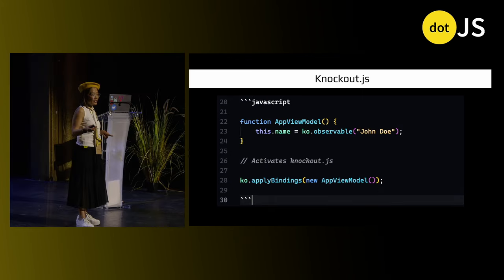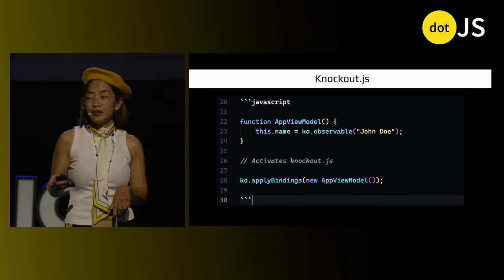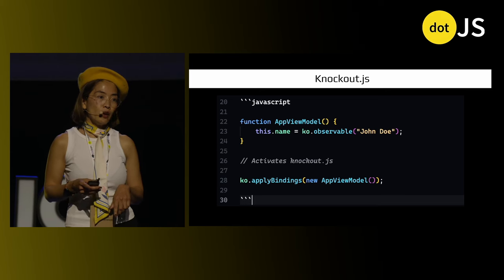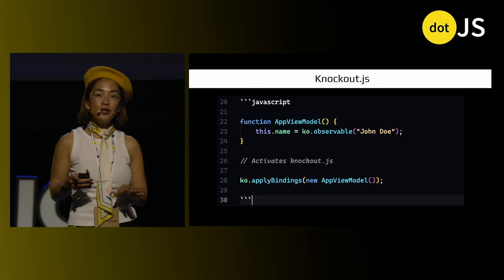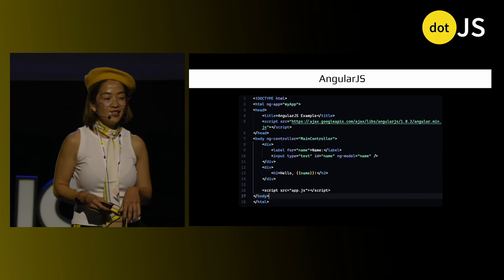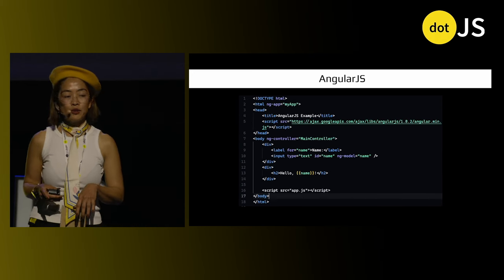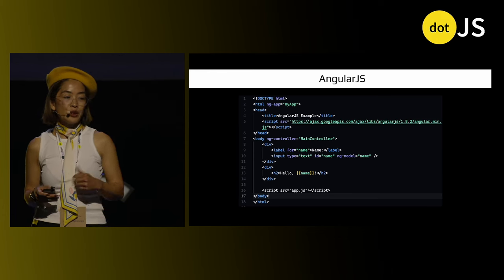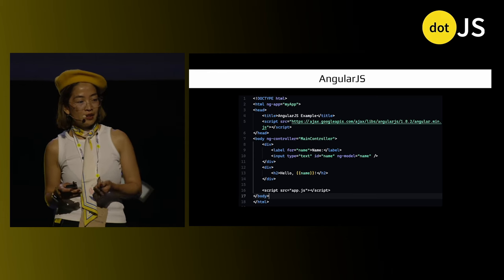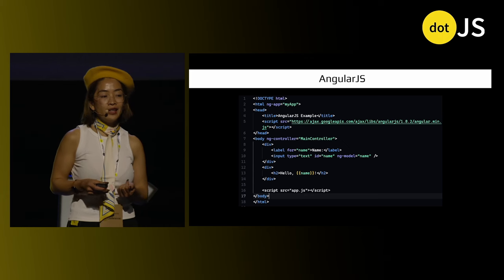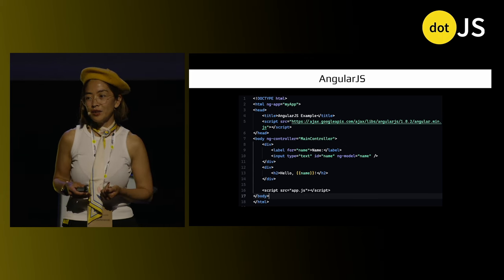With Knockout, any changes to the name observable would automatically update the UI, which was a revolutionary idea at the time. And then AngularJS followed suit with its own two-way data binding, synchronizing the model and the view. This innovation set the stage for the sophisticated reactivity that we see today.